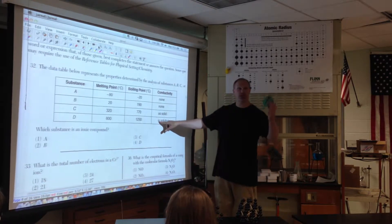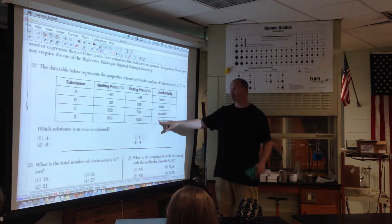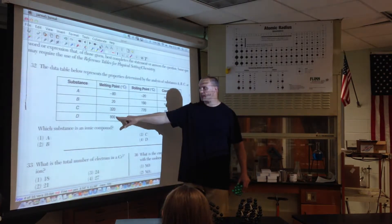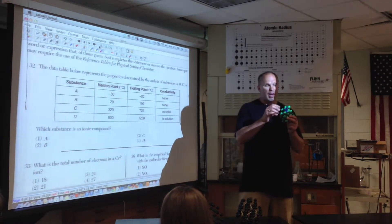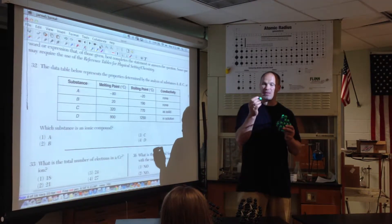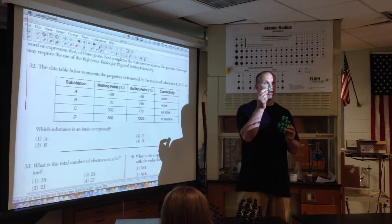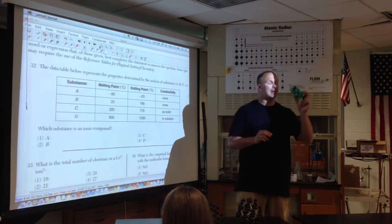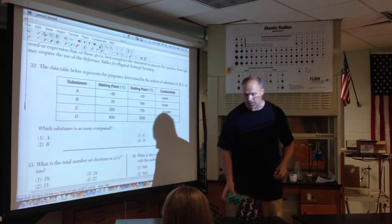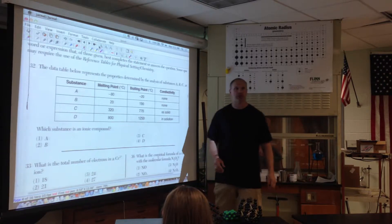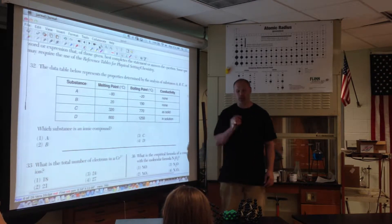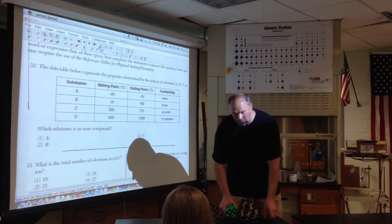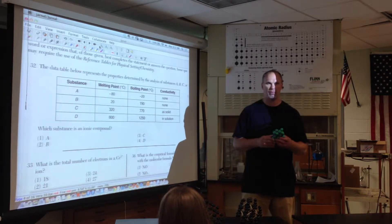Ionic compounds conduct electricity only in the liquid or aqueous phases, sometimes called molten liquid, because their ions are free. So their conductivity is never going to be in a solid. If they conduct in a solid, we're talking about a metal, bonding to a metal like copper. But here is in solution, in solution, if they dissolve.